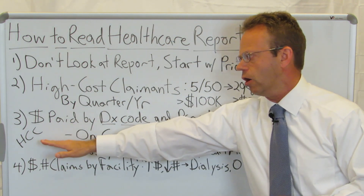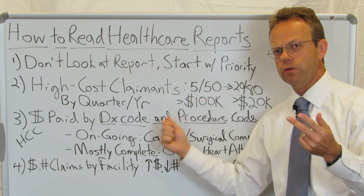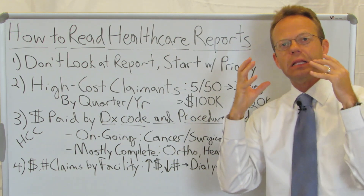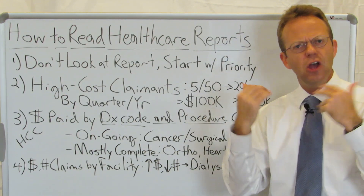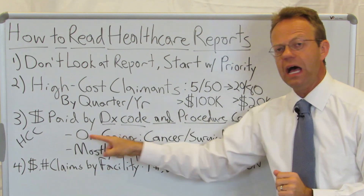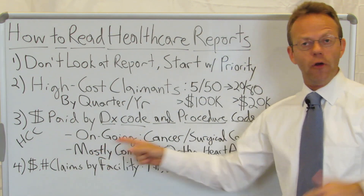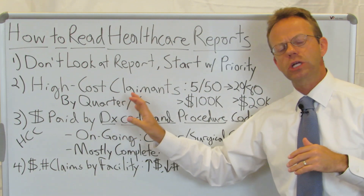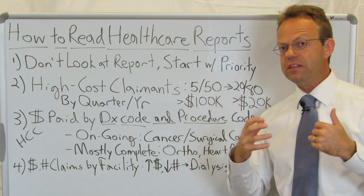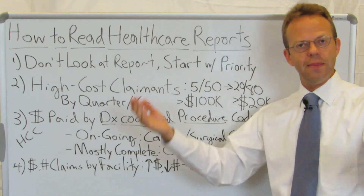You also want to look at the dollars paid on those high-cost claimants by diagnosis code and by procedure code — the ICD-10 codes for diagnosis and the CPT codes for procedure. Each claimant tells a story, and you want to see what's going on with these people. You want to find out which high-cost claimants are ongoing — meaning claims will keep generating — and which are mostly complete. This is exactly how stop-loss carriers look at high-cost claimants when setting premiums for specific and aggregate stop-loss coverage.